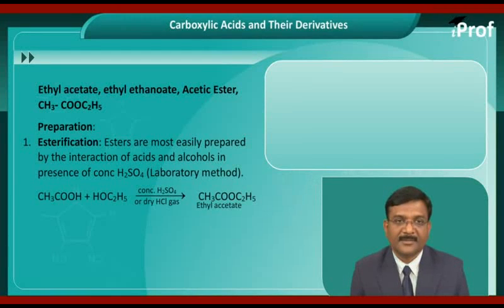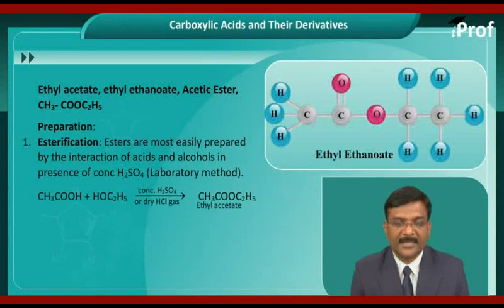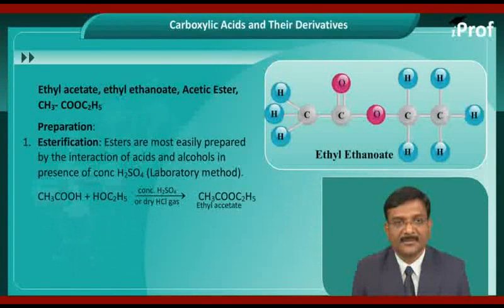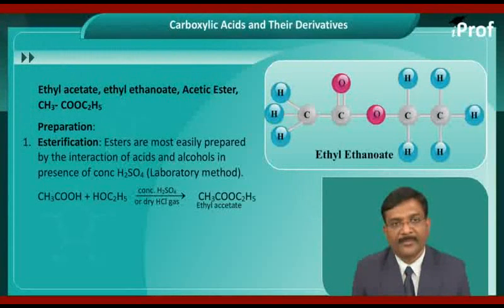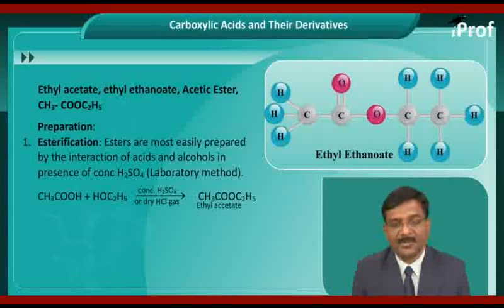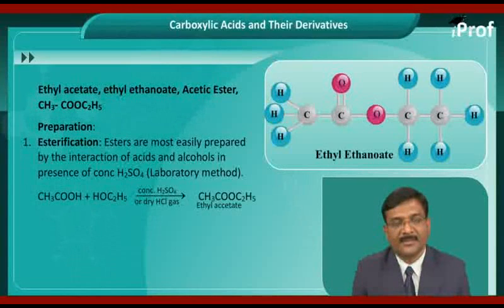The next derivative of carboxylic acid in the carboxylic group is ethyl acetate. Ethyl acetate is also known as ethyl ethanoate or acetic ester, and its formula is CS3COOC2H5.